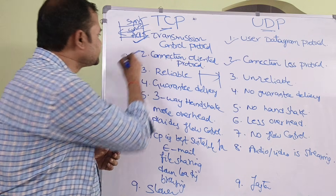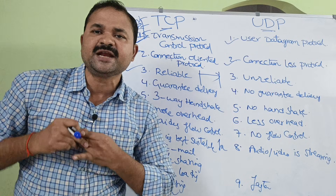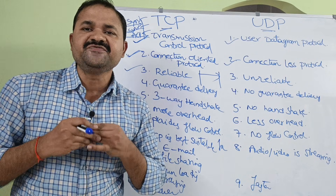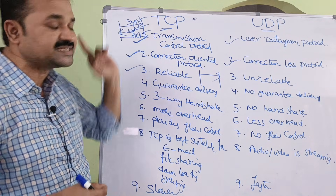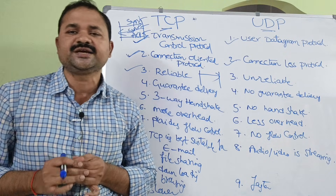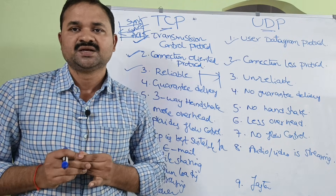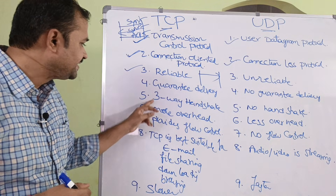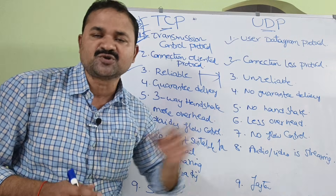Second difference: TCP is a connection-oriented protocol. First, a connection will be established between the sender and the receiver, and after establishing the connection only, the data will be transferred. In order to establish the connection, TCP uses a three-way handshake procedure.